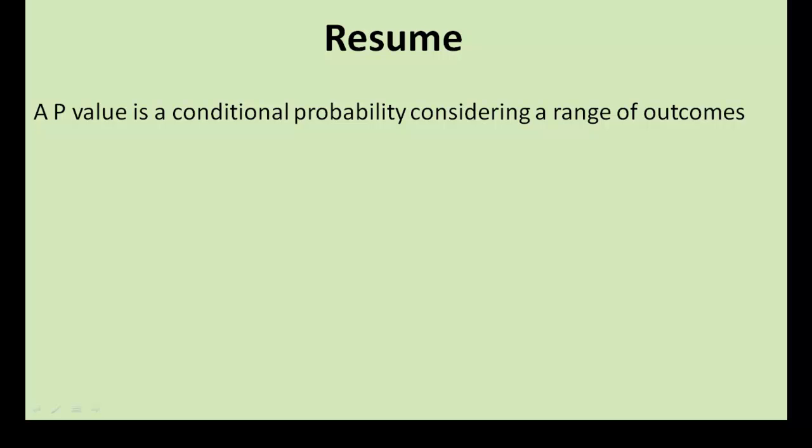In the last tutorial, we discovered that the p-value is a special type of probability. It's a conditional probability which also takes into account a range of outcomes. Specifically, it considers a single value obtained from our data set and all those values more extreme than it that could have been obtained, given that the value in some such larger group is equal to a specific value.